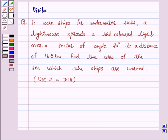Let's discuss a question which says to warn ships for underwater rocks, a lighthouse spreads a red colored light over a sector of angle 80 degrees to a distance of 16.5 kilometers. Find the area of the sea which the ships are warned. Use pi equals 3.14.